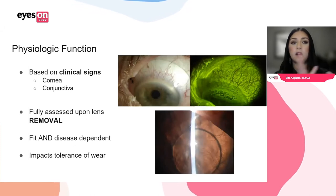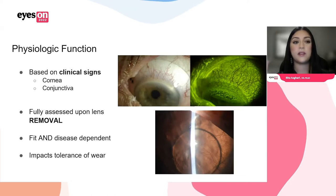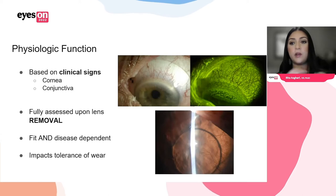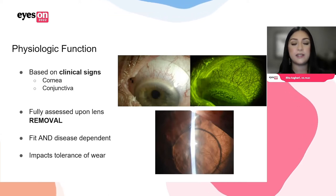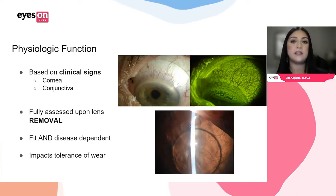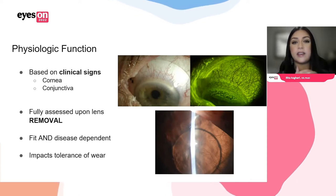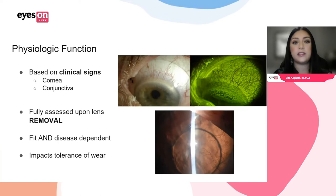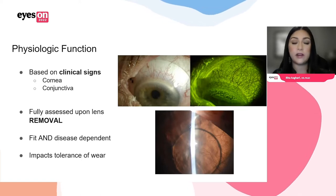Physiologic function is based on clinical signs, primarily of the cornea and the conjunctiva. This is really assessed once the lens is removed, because you're looking for things like corneal bullae, edema, staining of the conjunctiva, etc. This is also fit and disease dependent — depending on what the eye can tolerate and how the fit looks, this will dictate how the eye responds and ultimately does impact tolerance of wear.